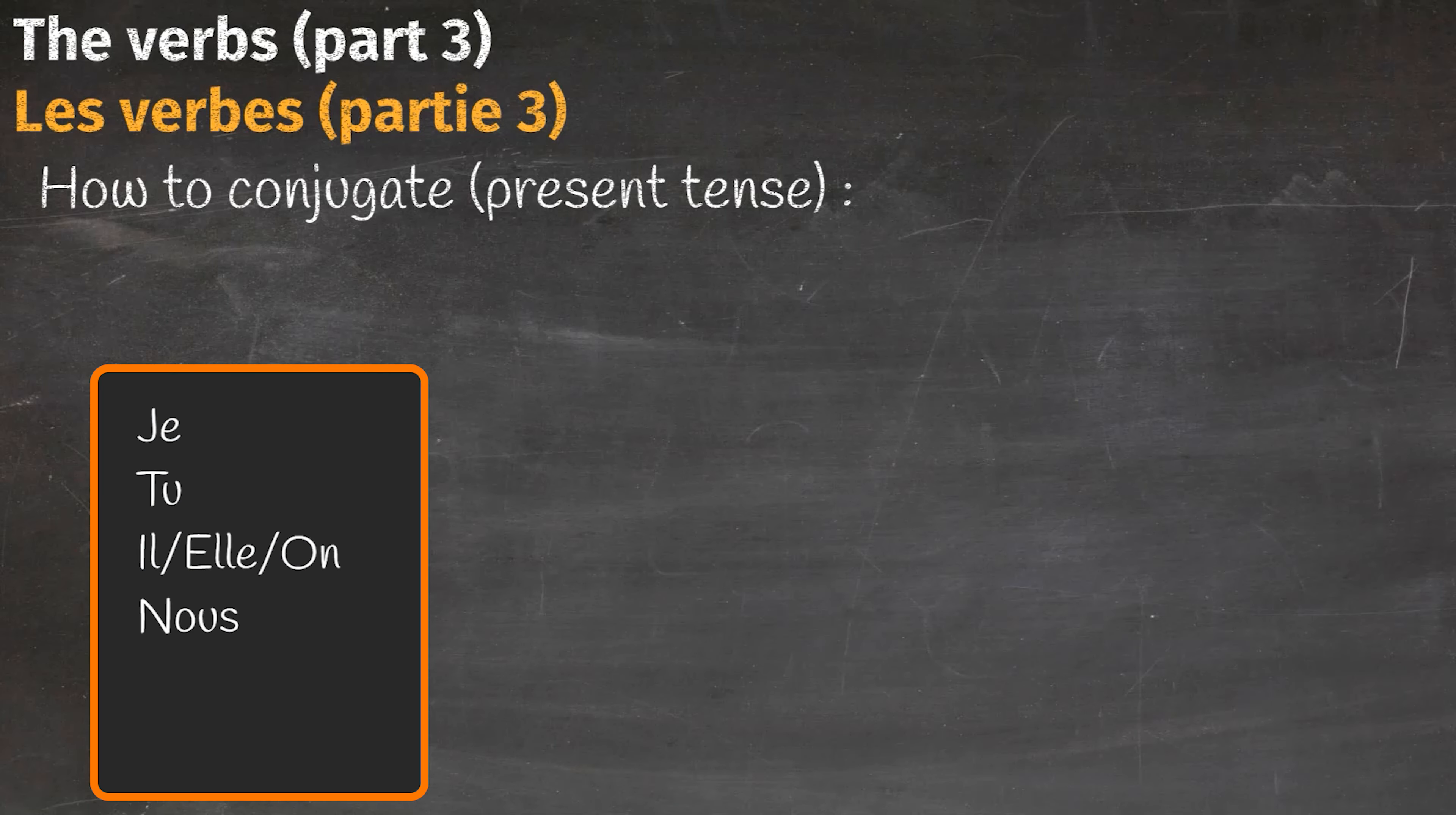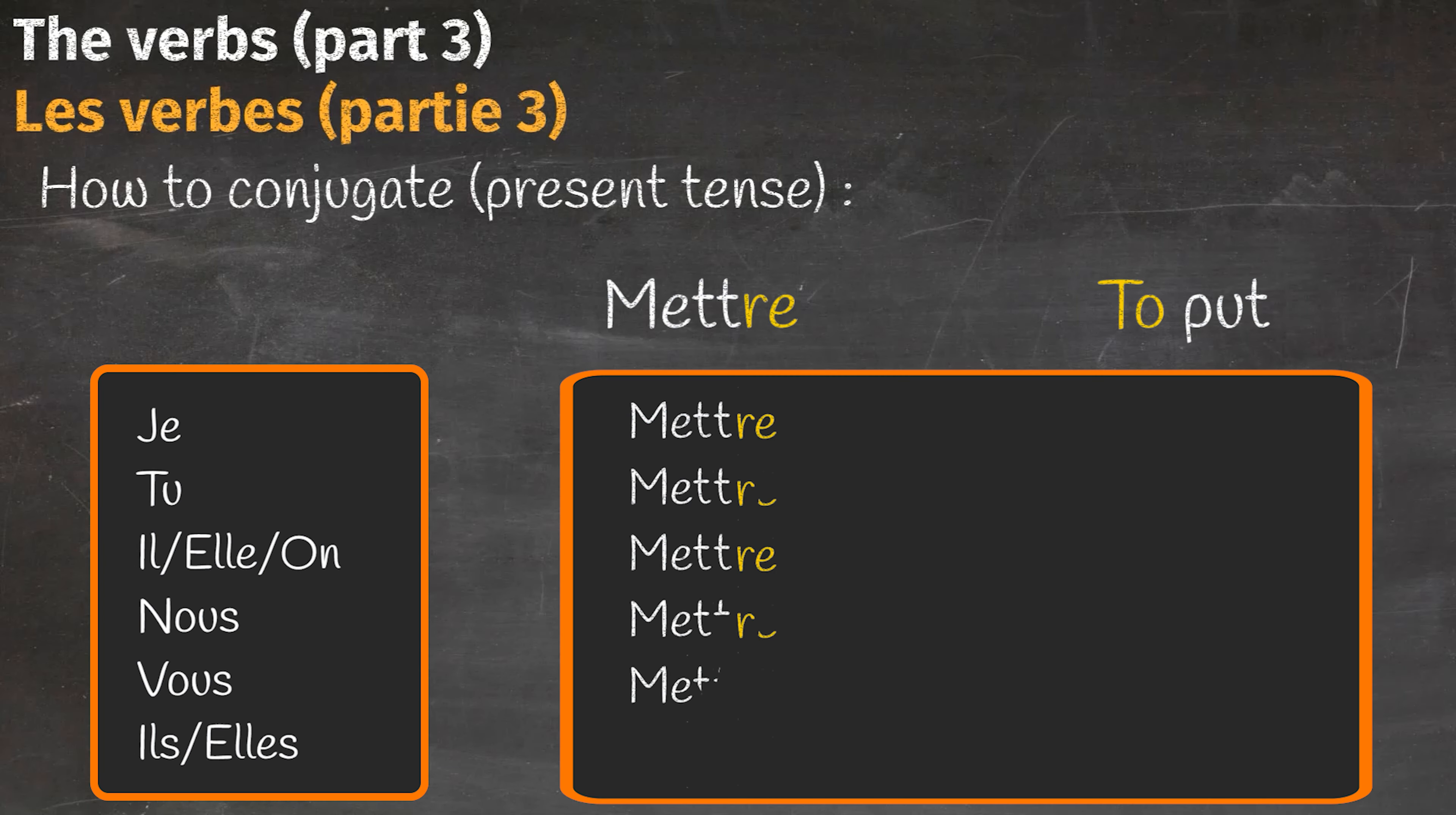Another example: to put - mettre. Once again, we start by unboxing, which means eliminating the final '-re'. And now let's assign personalities. Je mets, tu mets, il, elle, on met.